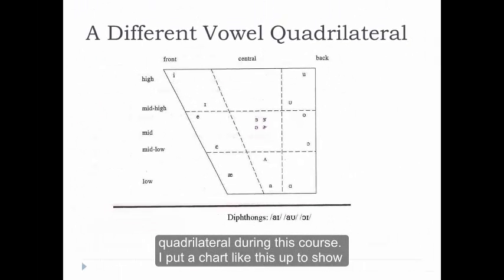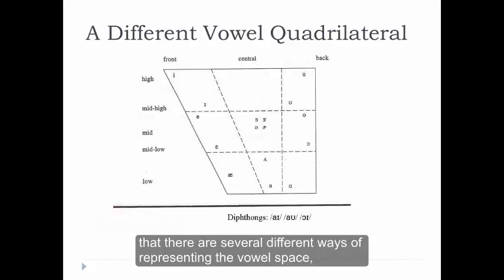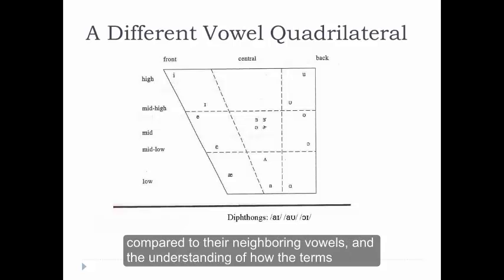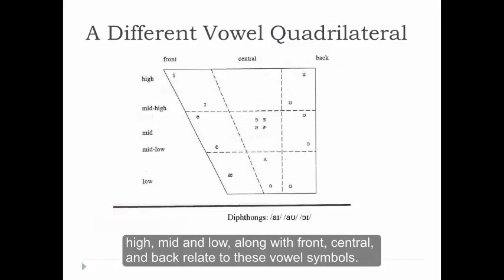I put a chart like this up to show that there are several different ways of representing the vowel space, and the most important thing is the relative position of the vowels compared to their neighboring vowels, and the understanding of how the terms high, mid, and low, along with front, central, and back, relate to these vowel symbols.